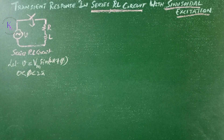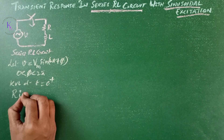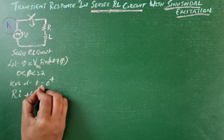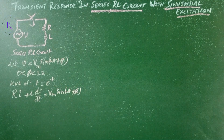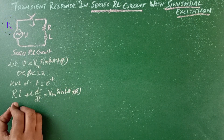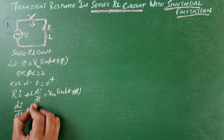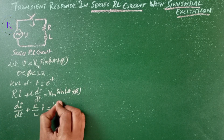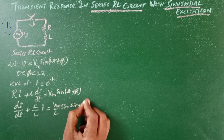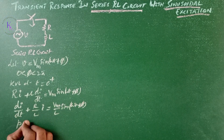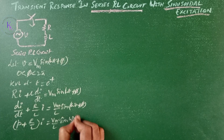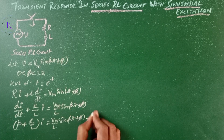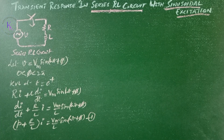Application of KVL at t = 0+ after the switch is closed gives us: Ri + L·di/dt = Vm·sin(ωt + φ). Dividing the entire equation by L we get: di/dt + (R/L)·i = (Vm/L)·sin(ωt + φ). This can be written as (P + R/L)·i = (Vm/L)·sin(ωt + φ), where P represents the first derivative d/dt. Let this be equation number 1.